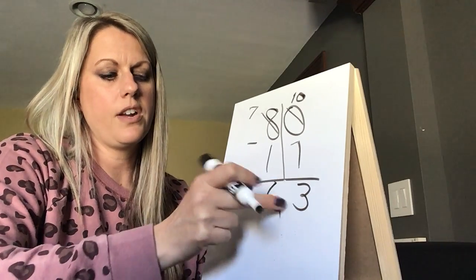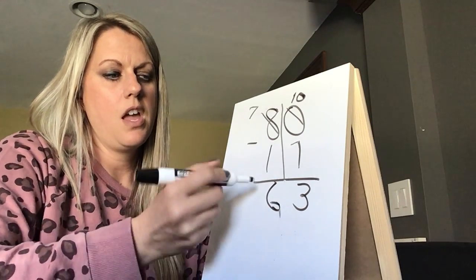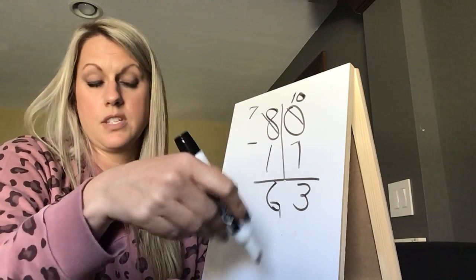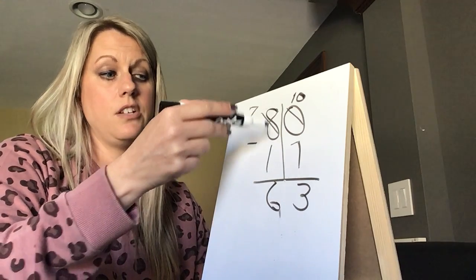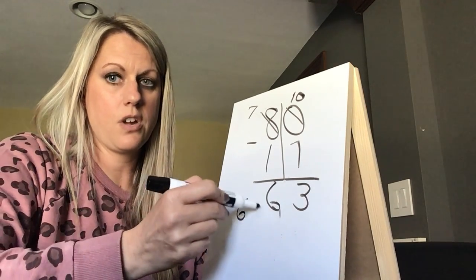And then we can check our answer by doing the reverse of that. This is subtraction, so this is just like a fact family. 80 take away 17 is 63, and 63 plus 17 should equal 80. So let's go ahead and try it.